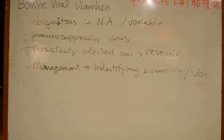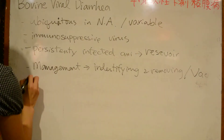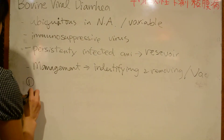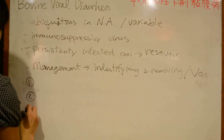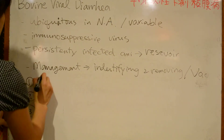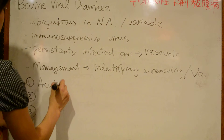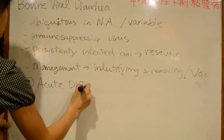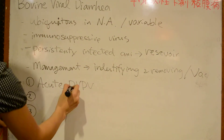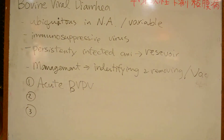The Bovine Viral Diarrhea virus infection can be divided into three categories: the first one is acute BVD infection, the second is infection during pregnancy, and the third is persistent infection.